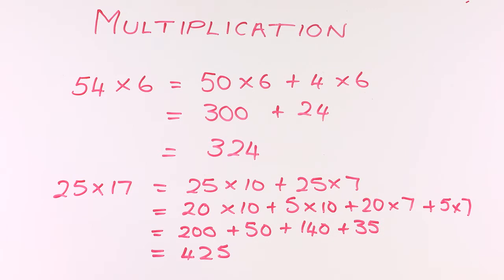Now we could rename these again, and certainly if students were struggling, I would rename the 140 to be 100 plus 40, and the 35 to be 30 plus 5. But by this stage, hopefully many of our students won't need that additional step of renaming, and will simply be able to add 200 plus 50 plus 140 plus 35 to get an answer of 425.